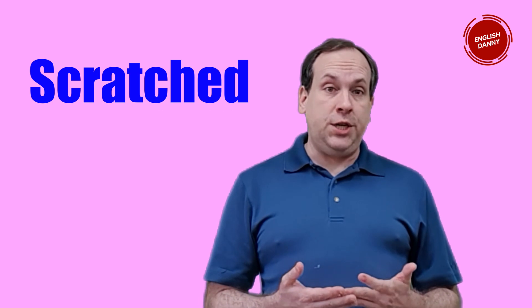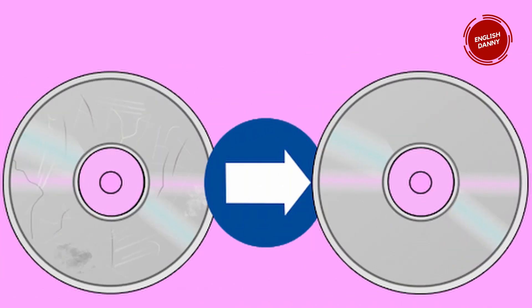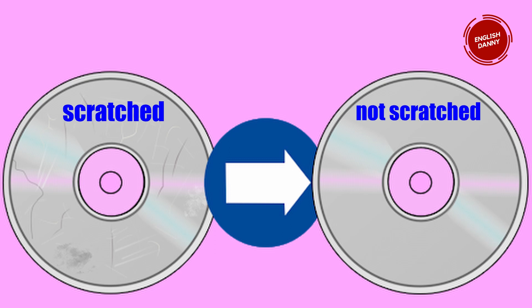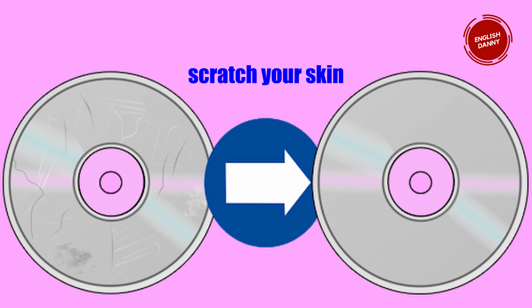Scratched. A scratch is a mark on the surface of something. The CD on the left is scratched. You can scratch glass or metal, and you can also scratch your skin. If you've ever owned a cat, you've probably been scratched before.